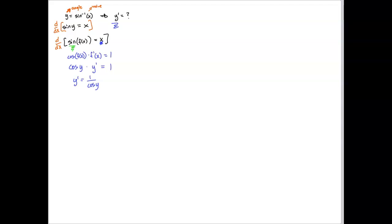Trig comes from right triangles — it's ratios of sides of right triangles. Since y is an angle, I should be able to draw a right triangle and let y be an acute angle in that triangle. Based on the equation sine(y) = x, I can fill in the sides. It's easier if we write sine(y) = x/1, because now we have it as a ratio, and sine is opposite over hypotenuse.